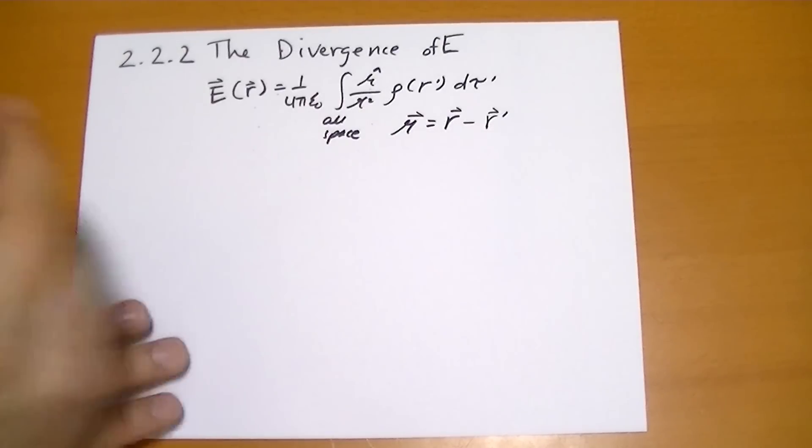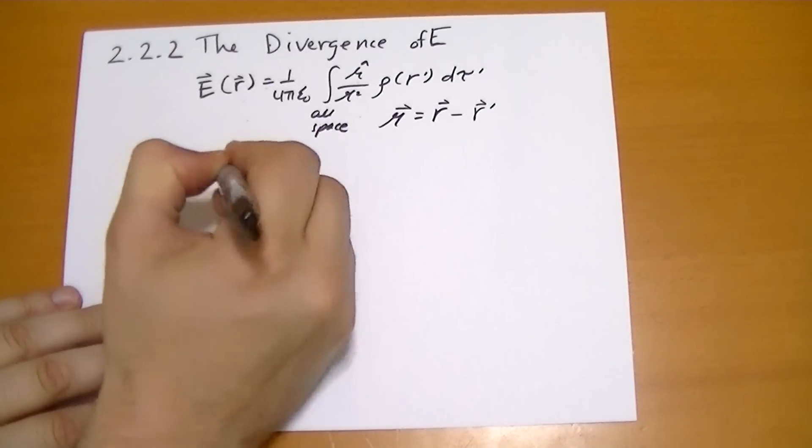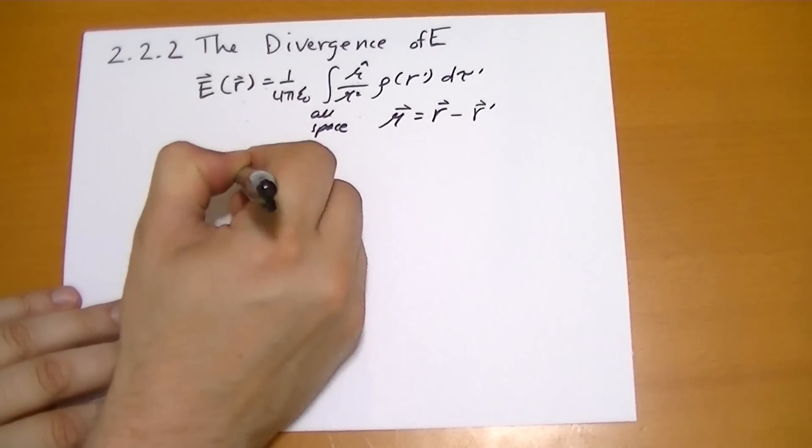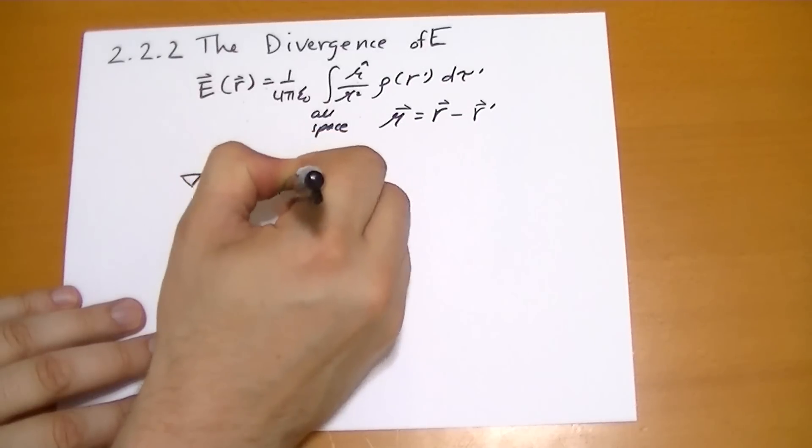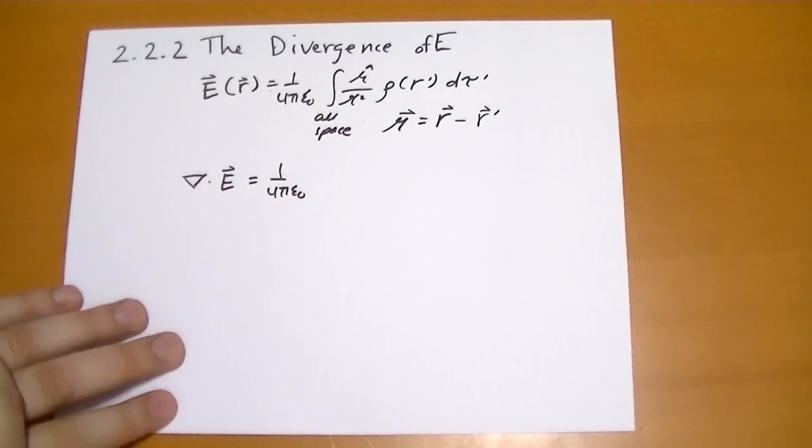So, the interesting thing is if you take the divergence of this E-vector that we were just calculating, well, that's going to be 1 over 4 pi epsilon-naught, because just like a derivative, you can pull that out of there.